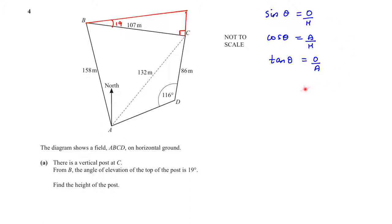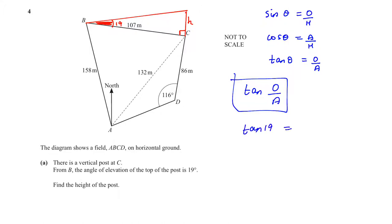Remember your trigonometry rules. We have this angle and we want to find the height — the opposite side. We also have the adjacent side, so we are going to use the tan rule. Therefore tan 19 = H / 107. Tan 19 multiplied by 107 gives us the height, which is 36.8 meters.